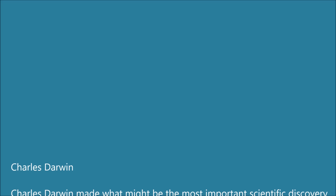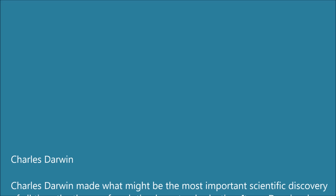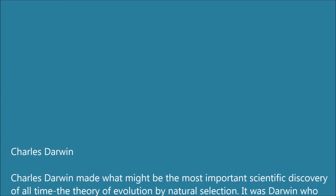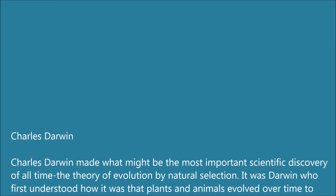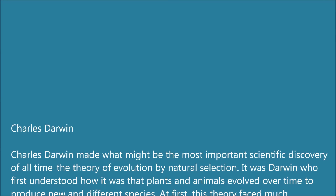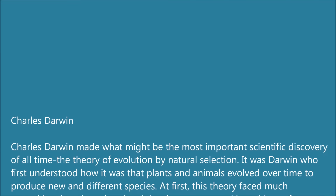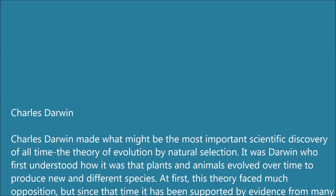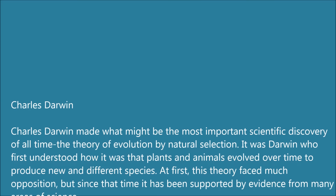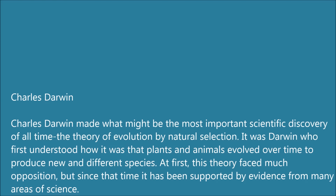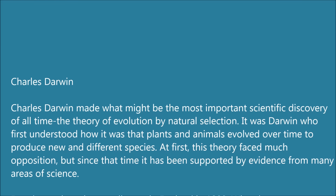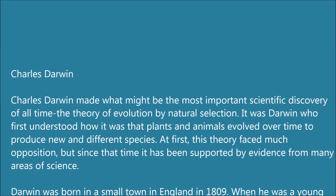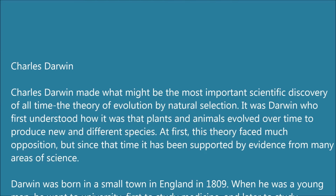Charles Darwin made what might be the most important scientific discovery of all time: the theory of evolution by natural selection. It was Darwin who first understood how it was that plants and animals evolved over time to produce new and different species. At first, this theory faced much opposition, but since that time it has been supported by evidence from many areas of science.